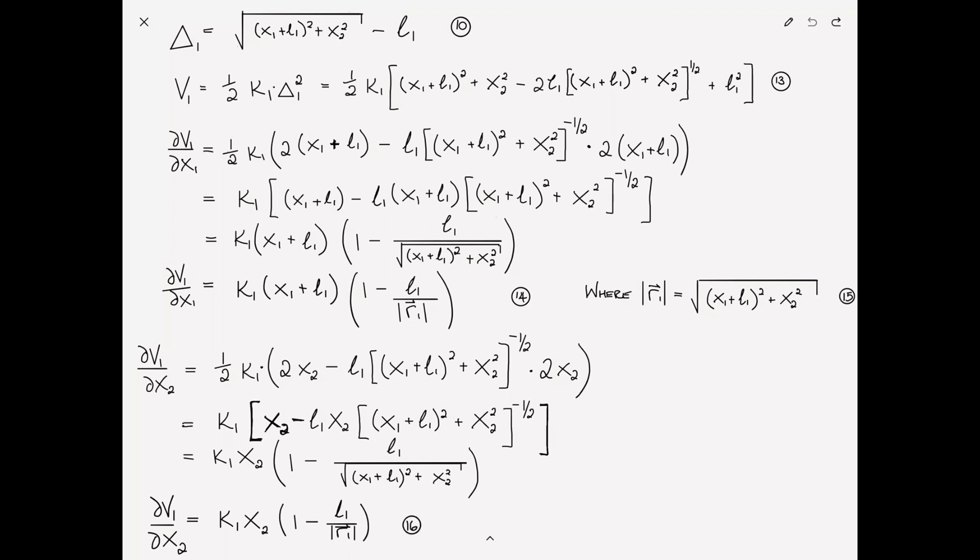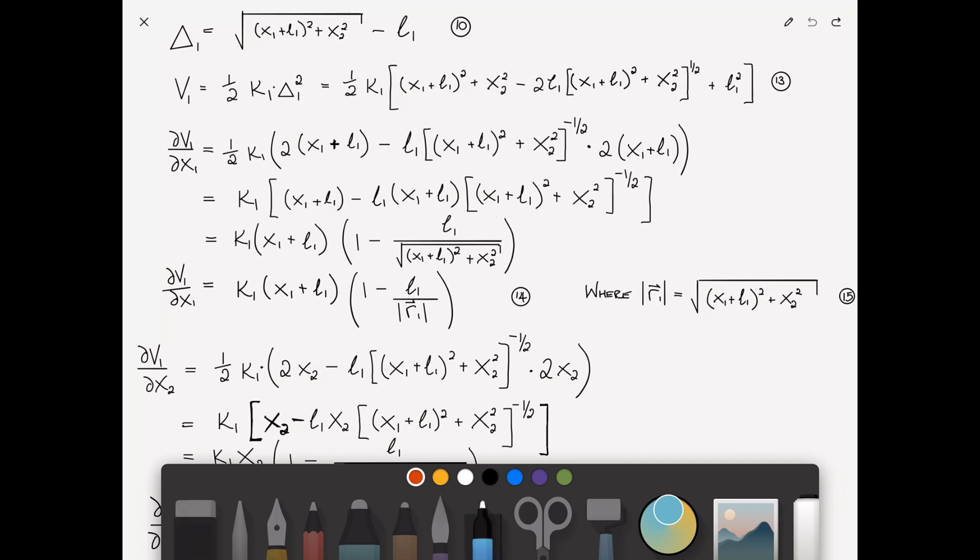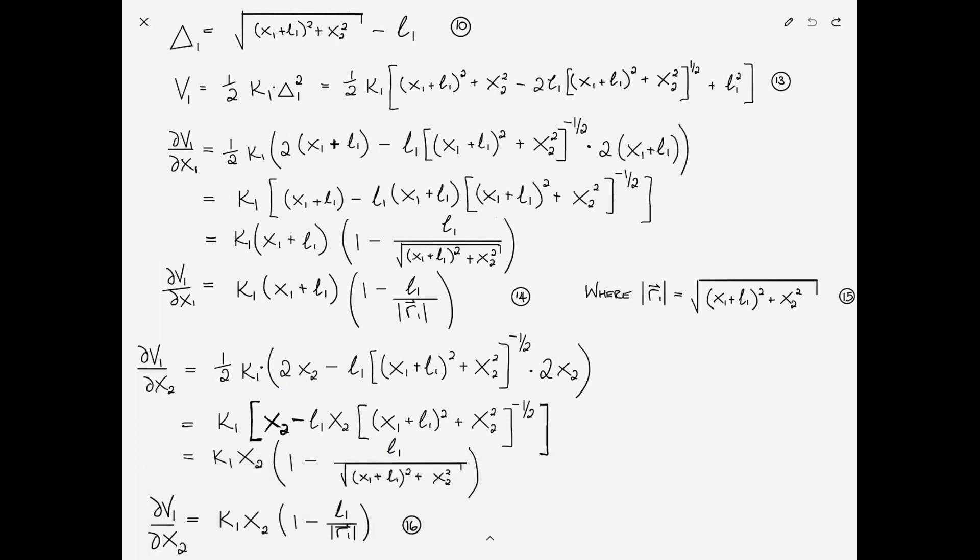So now I'm going to proceed in exactly the analogous manner with delta 2 and spring 2 and finding the derivative of v2 with respect to x1 and x2. What in fact I can do is take these results. Let me put some boxes around it. And if I just substitute a 2 in every place that I see a 1 and I substitute a 1 in every place that I see a 2, I can do exactly the same thing for v2.